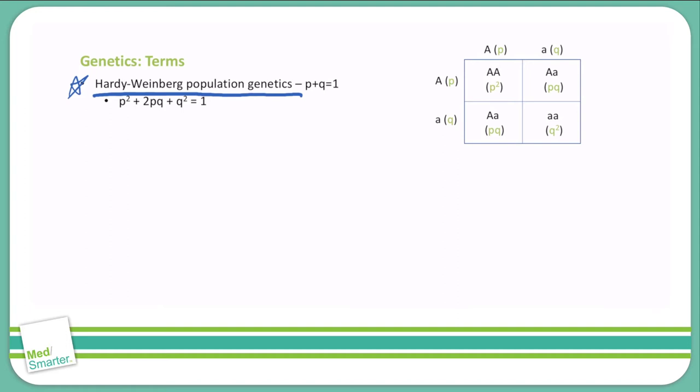First and foremost, p+q equals 1. That is just stating that P, which is one allele, and Q, which is a second allele, have to equal 1. They cannot equal 0.9. They cannot equal 1.1. They have to equal 1.